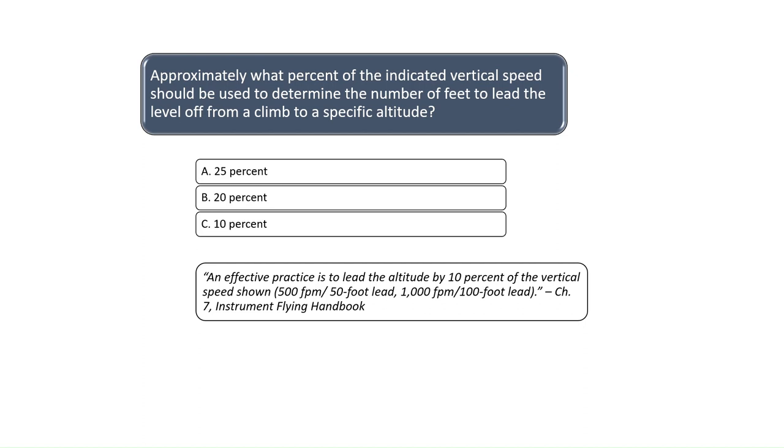See Chapter 7 of the Instrument Flying Handbook to find the answer to this question. The Instrument Flying Handbook states that pilots should lead the level off from a climb at 10% of the indicated vertical speed. If a pilot were climbing at 500 feet per minute, then they should start leveling off 50 feet below the assigned altitude since 50 feet is 10% of indicated vertical speed of 500 feet. The correct answer is C.